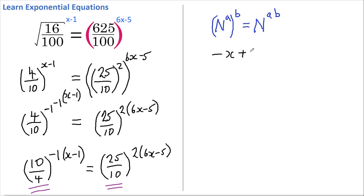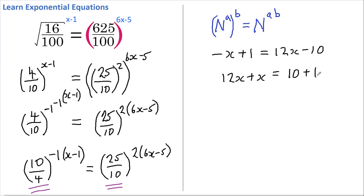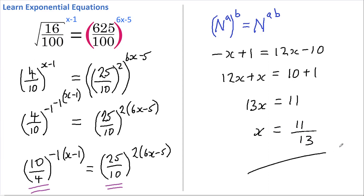Negative x plus 1 equals 12x minus 10. Rearranging, we get 12x plus x equals 10 plus 1, therefore 13x equals 11, and our answer is x equals 11 thirteenths. That's it — we're done, not too bad in the end.